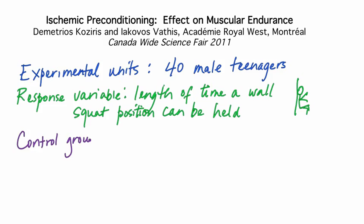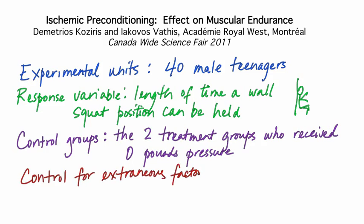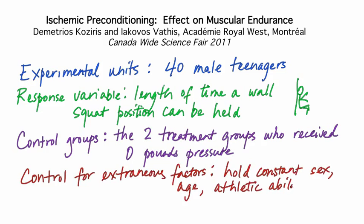Note the use of a control group here. The students needed to know if ischemic preconditioning worked, so they gave a sham treatment of 0 pounds to some of their experimental units — some for 10 minutes and some for 20 minutes. To control for extraneous factors, only a specific group of people were studied: male teenagers of similar athletic ability, chosen because they participate in sports at school. Although this wasn't done, another way they could have controlled for extraneous factors was to use blocking — for example, enrolling both athletes and non-athletes and assigning the four treatments to subjects within each athletic group.